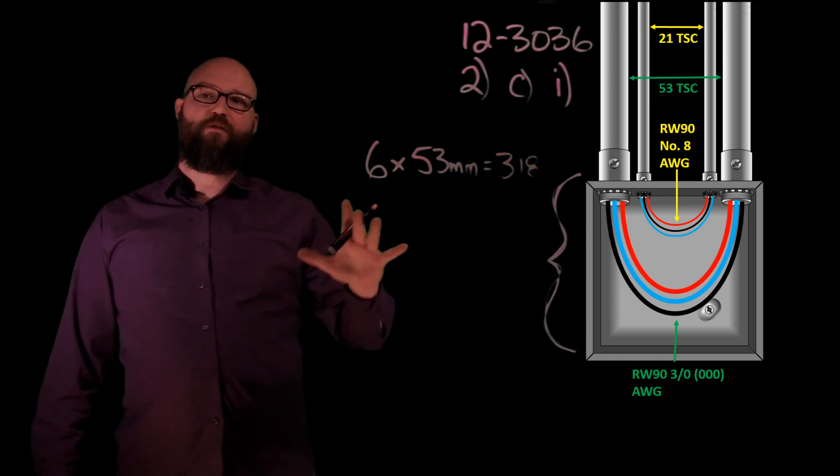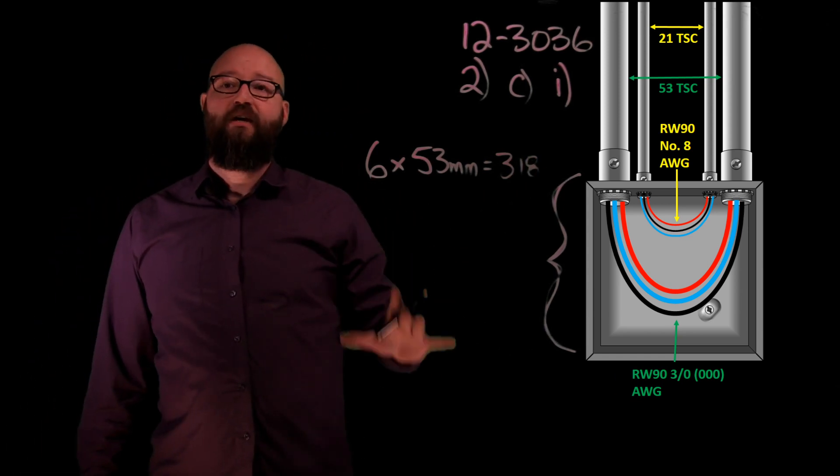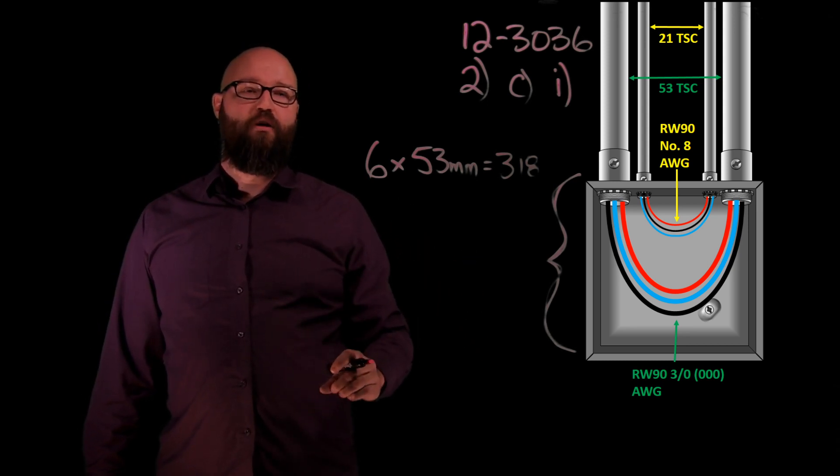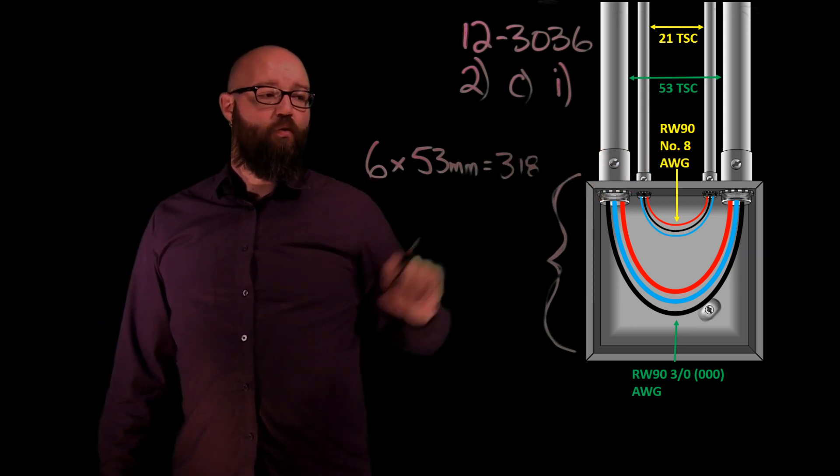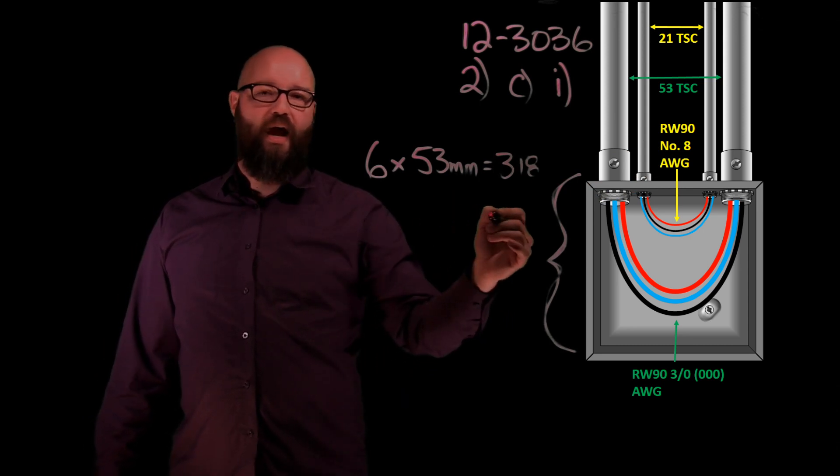Now we're not done there. It tells me also that what I'm going to do is take the rest of the diameters of those trade size conduits on that same wall. So we have these other conduits here and we're going to add those right in there.